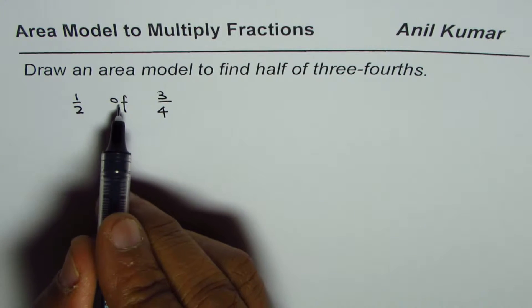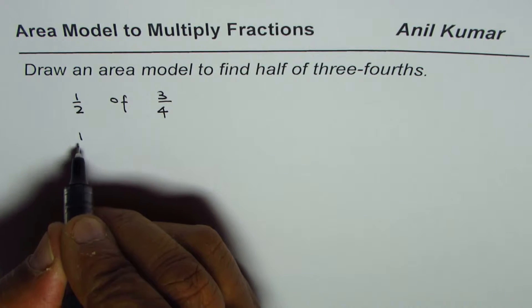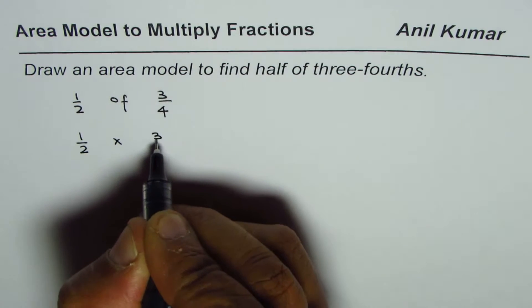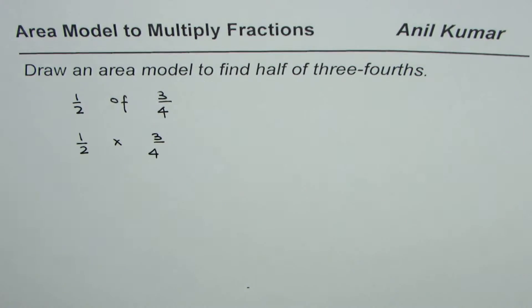Whenever you have half of, it really means times. So half times three-fourths. That is what you need to do.